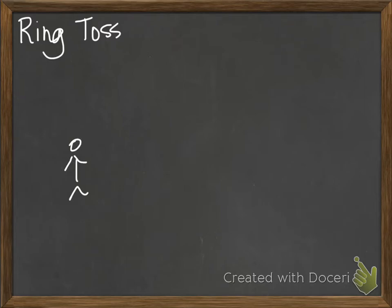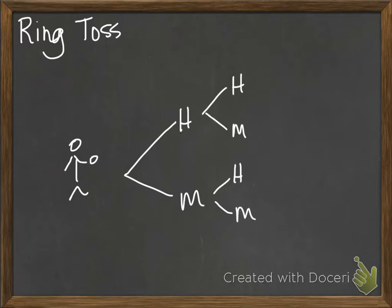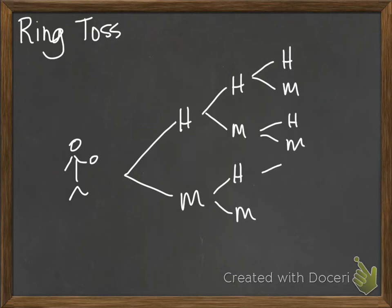So you're tossing your ring — you can either hit it or miss it. Let's say there's a 50-50 chance. On your second throw, it doesn't depend on the first; you get another two options — you could hit it or miss it. Same thing on the third round: you could hit it or miss it, all the way down like that.